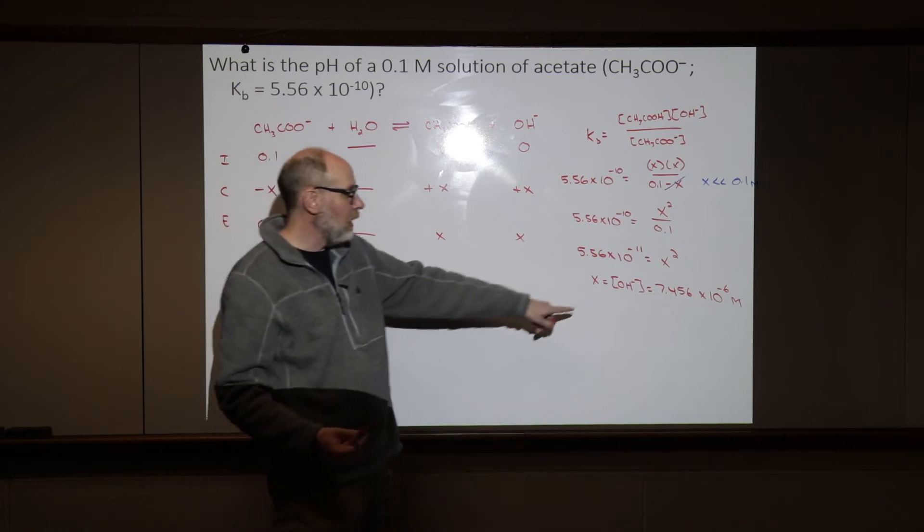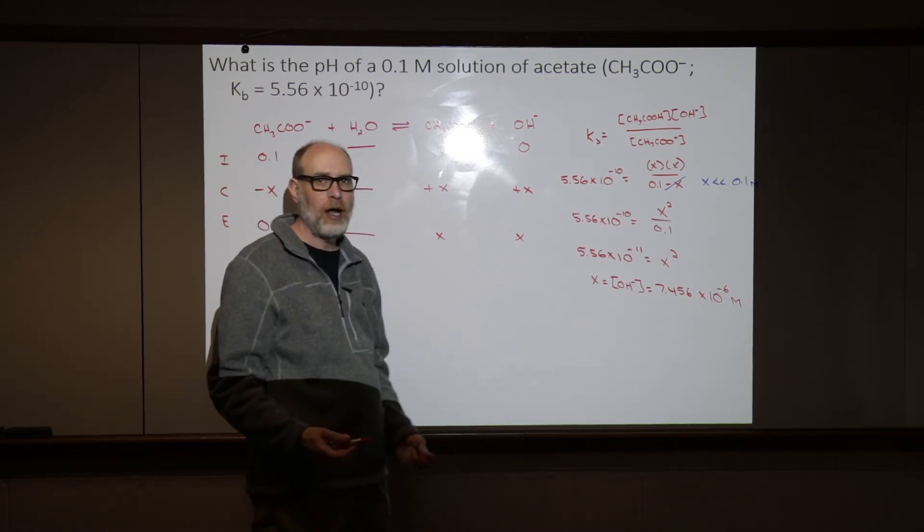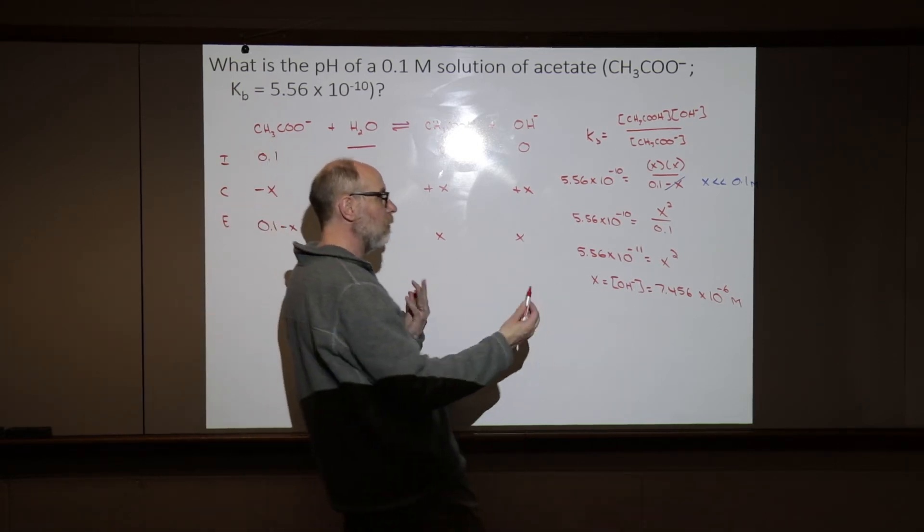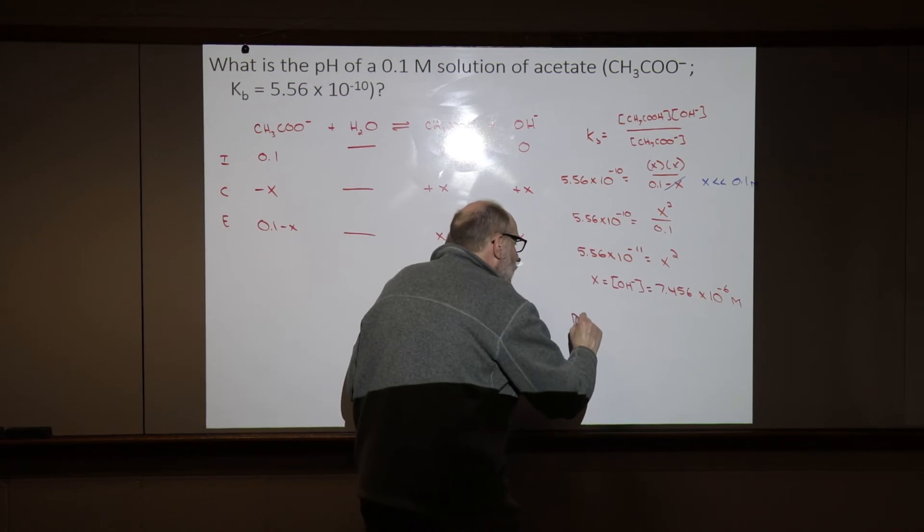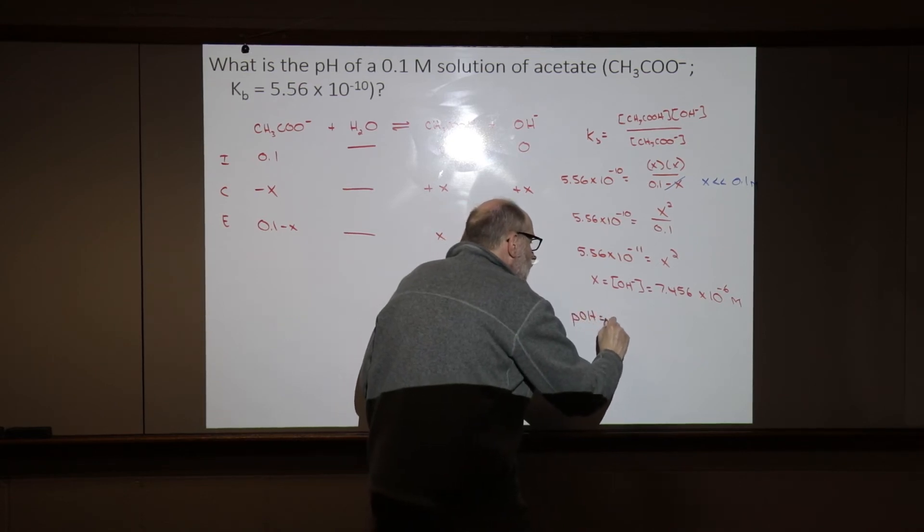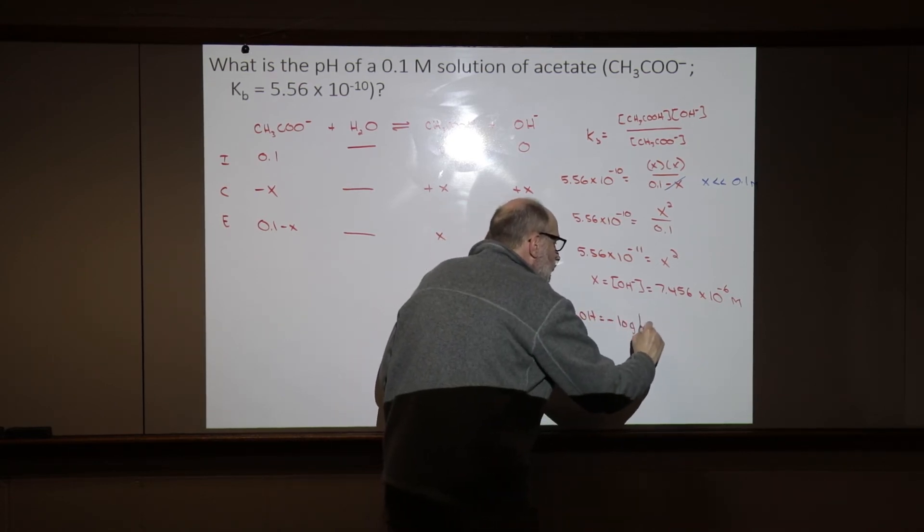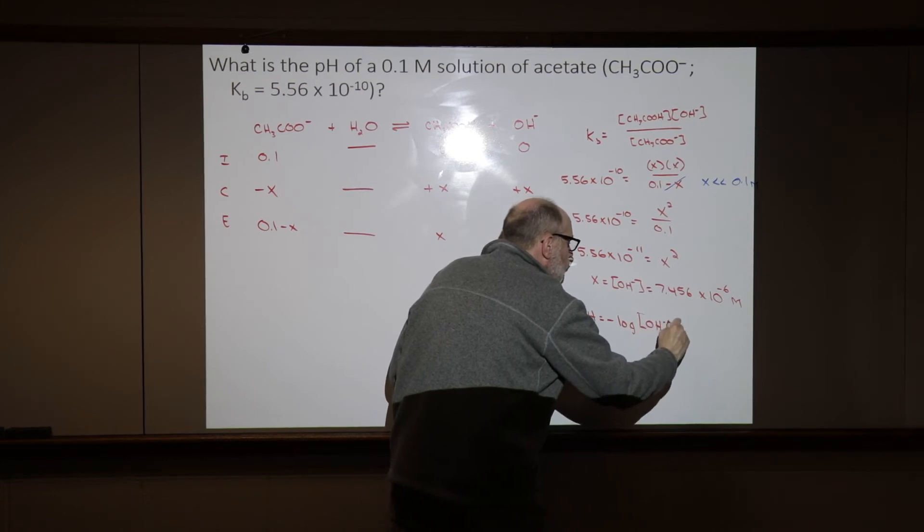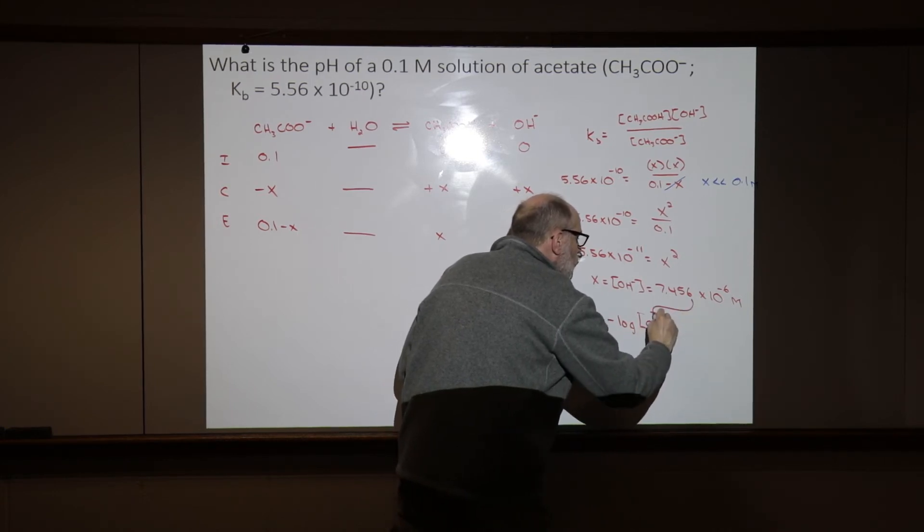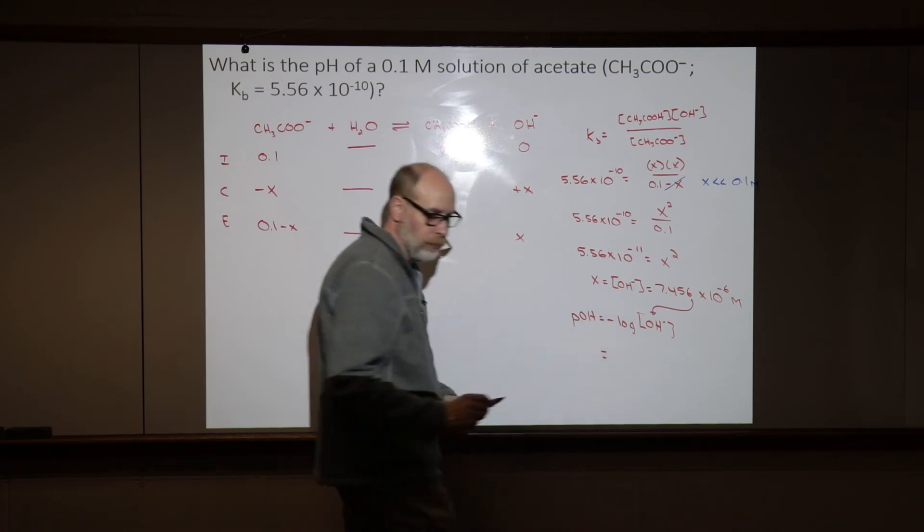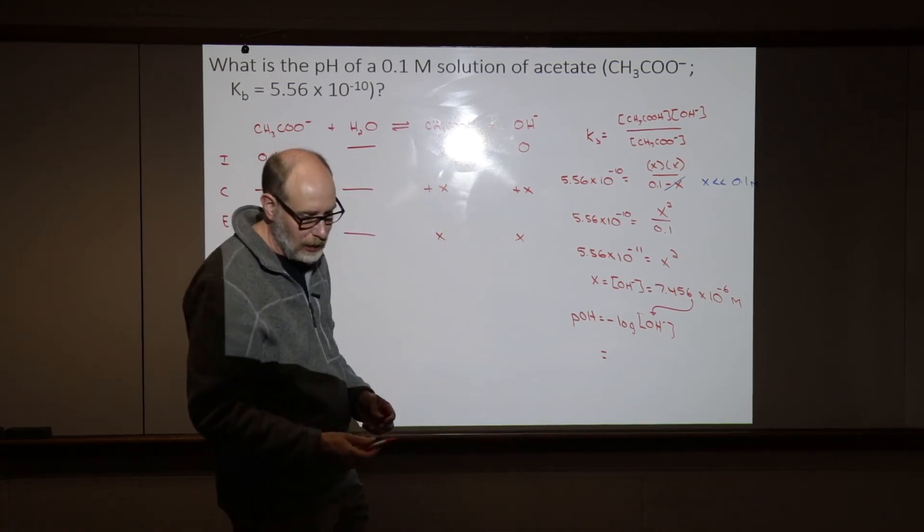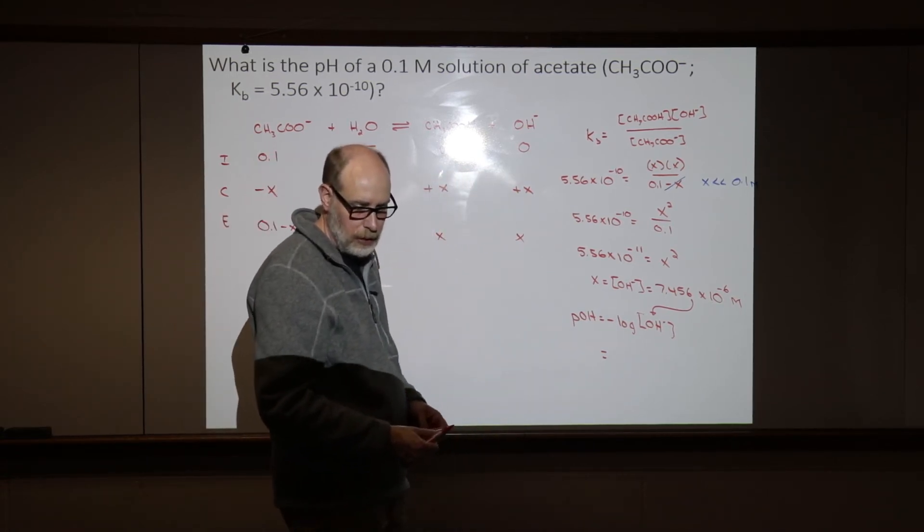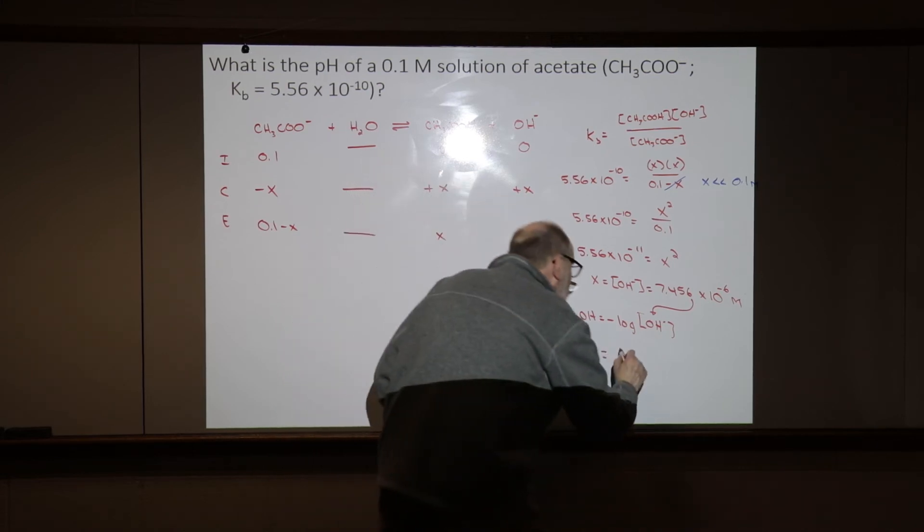All right? If we know the equilibrium concentration of hydroxide, we can calculate not the pH directly, but the pOH. Minus log of the equilibrium concentration of hydroxide. And in this case, the pOH is going to be 5.127.